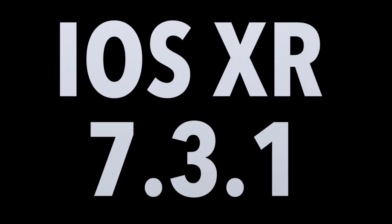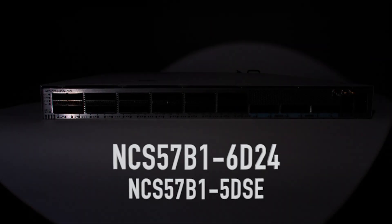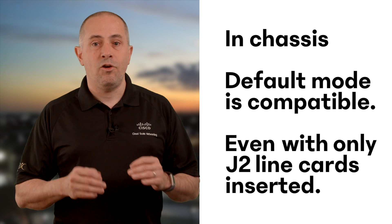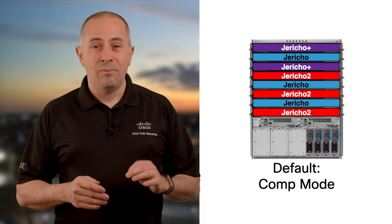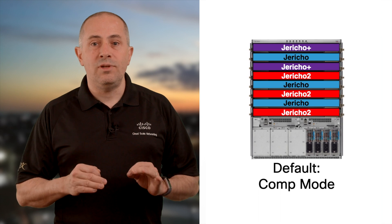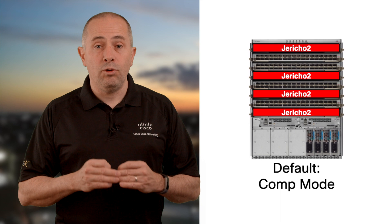Today, in March 2021 and with IOS XR 7.3.1, the only two fixed systems with J2 are the NCS57B1-6D24H-NSC, and we have much more coming in 7.4.1 and 7.5.1. In the modular chassis, the default mode is compatibility. It will be the case when the system starts and detects a mix of J, J Plus, and J2 cards, but also if the system is fully populated exclusively with Jericho 2 cards — it will still boot by default in compatibility mode. It's possible that someone later on would want to insert a J Plus card, for example. So we support the mix of all existing line cards — Jericho, Jericho Plus, Jericho 2 — with or without XRTCAM. That's what the compatibility mode is made for.